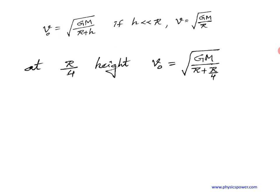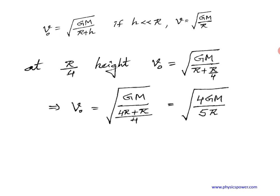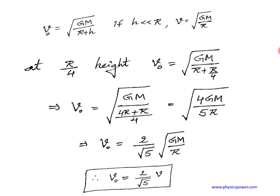Substituting H = R/4, the denominator becomes R + R/4. Taking LCM of 4, that is (4R + R)/4 = 5R/4. Separating the 4 gives a factor of 2 outside the root and root 5 inside, alongside square root of GM/R, which equals V. Therefore v₀ = (2/√5) × V. The velocity of the satellite at height R/4 is (2/√5) × V.